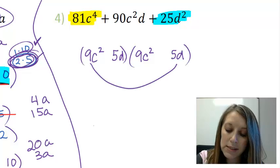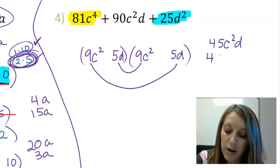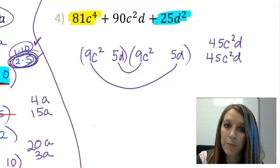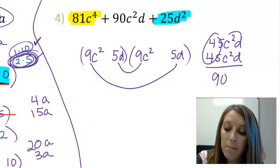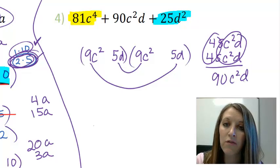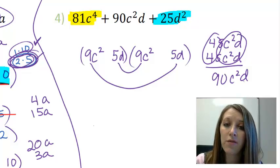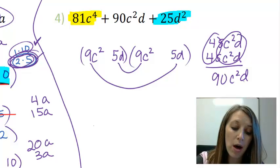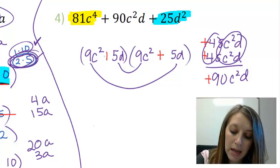So my outside gives me a 45C²D, and my inside gives me a 45C²D. And not only do my numbers work out to give me the 90 that I'm looking for, my variables also match. I have like terms to give me the variables that I'm working for. So sometimes the numbers might work out, but the variables don't. So you have to be very careful all the way around. Now I want positives. Positive here plus positive there gives me positive here. So I have a plus and a plus.